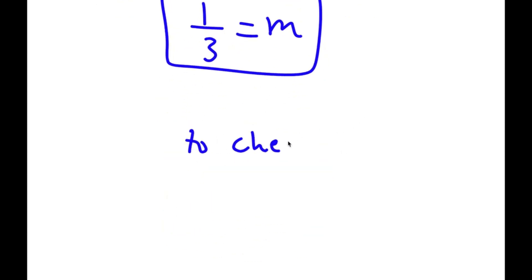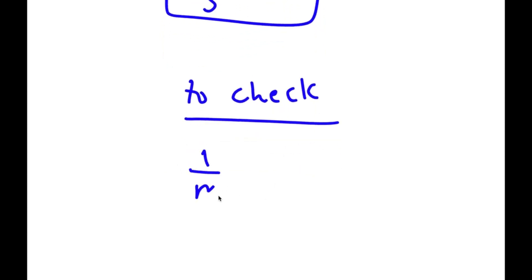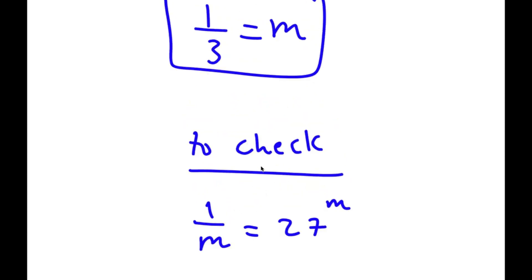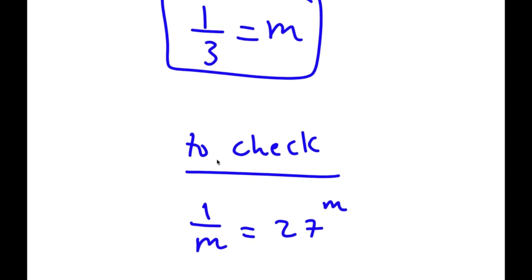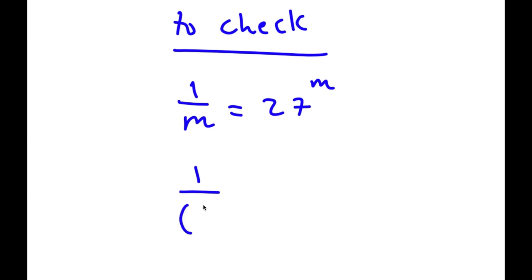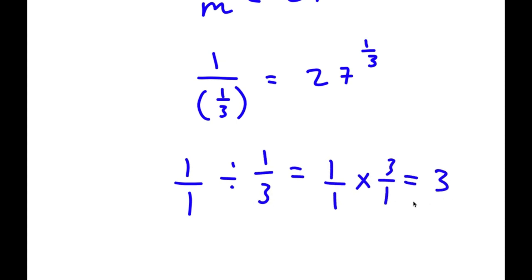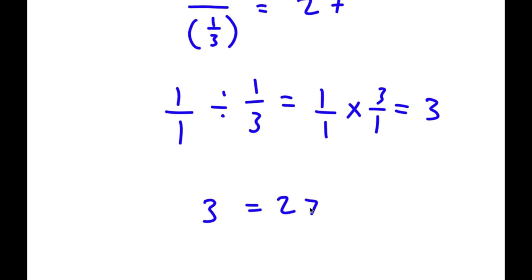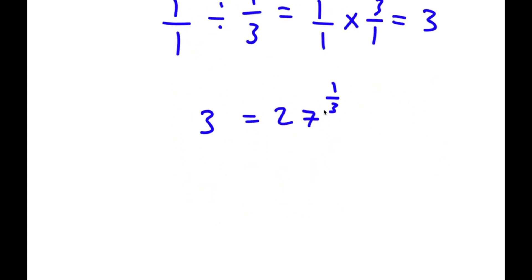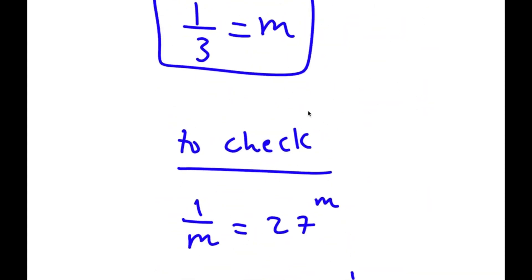To check, I start with 1 over m equals 27 to the power of m, and we know m is 1 over 3. So I have 1 over 1 over 3 equals 27 to the power of 1 over 3. Now 1 divided by 1 over 3 is 1 times 3 over 1, which equals 3. And 27 to the power of 1 third is the cube root of 27, which is 3. So I have 3 equals 3, confirming the solution is correct.